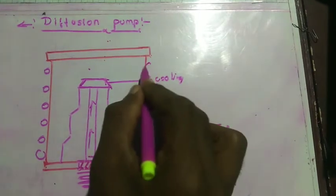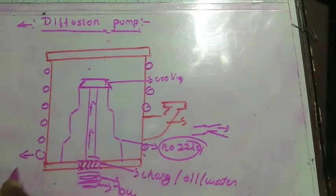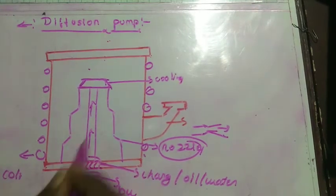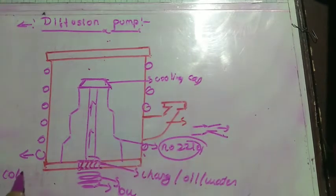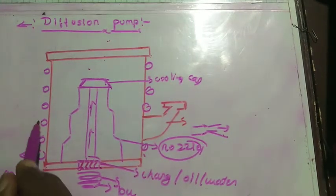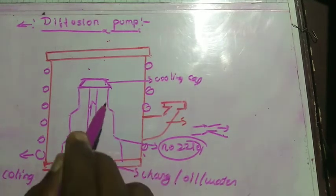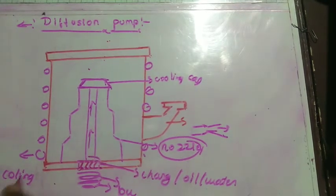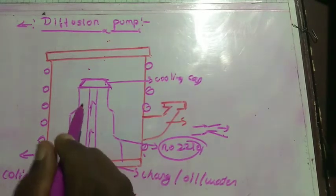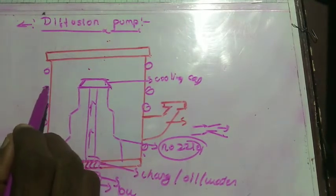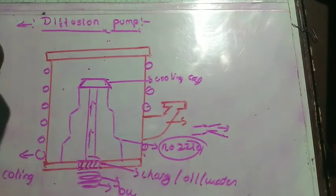This is the lower part of the diffusion pump. These are called the cooling coils, and their working is similar to the cooling cap. These are circular coils present in the outer frame of the diffusion pump that help to cool the system by sucking the heat out from the system.